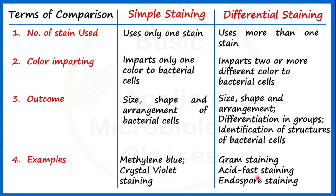Acid fast staining is used in medical microbiology laboratories to identify Mycobacterium tuberculosis. Acid fastness is a property related to the presence of mycolic acid in the cell wall; non-acid fast bacteria do not have mycolic acid. Endospore staining is another example — endospores are special structures present only in some bacteria. Endospore staining differentiates endospore-forming bacteria from non-endospore-forming bacteria, and can also locate the position of the spore within the vegetative cell.